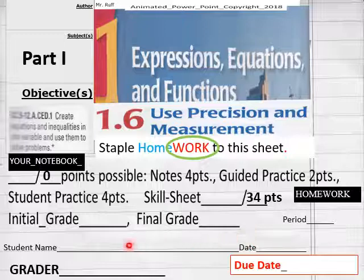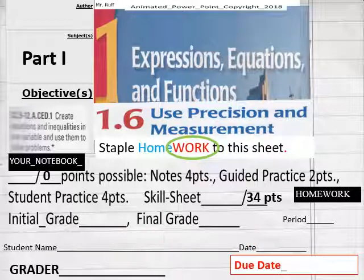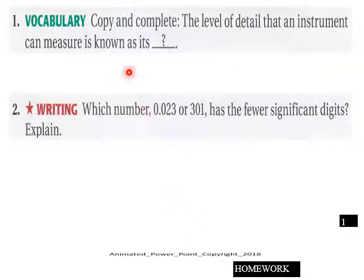Here on your tablet, your PC, your iPad, your iPhone, your Droid, your Chromebook, let's go to page one. Vocabulary: copy and complete. The level of detail that an instrument can measure is known as its blank. Fill in the blank there.